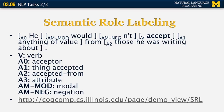Starting with the sentence 'he wouldn't accept anything of value from those he was writing about': A0 (the acceptor) is he, A1 (the thing accepted) is anything of value, and A2 (accepted from) is those he was writing about. Semantic role labeling will be covered in more detail later; in the meantime, you can look at an online demo at the University of Illinois.